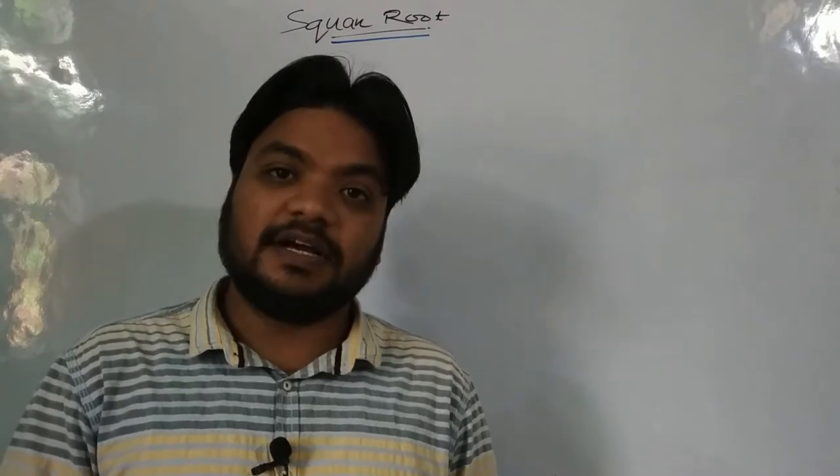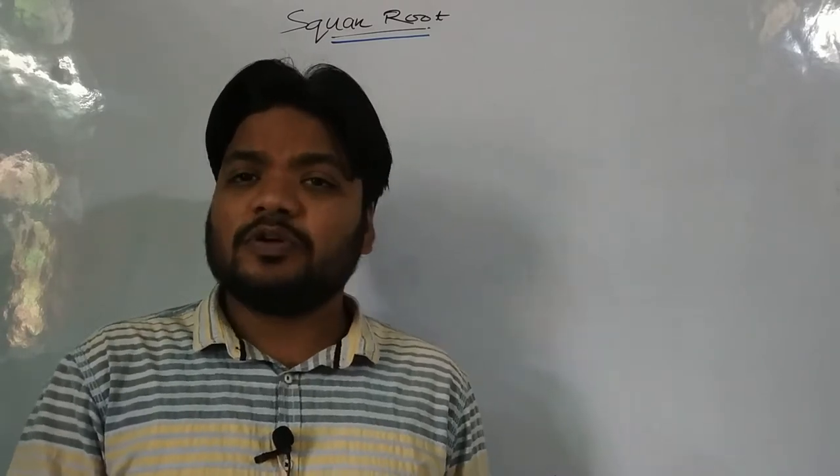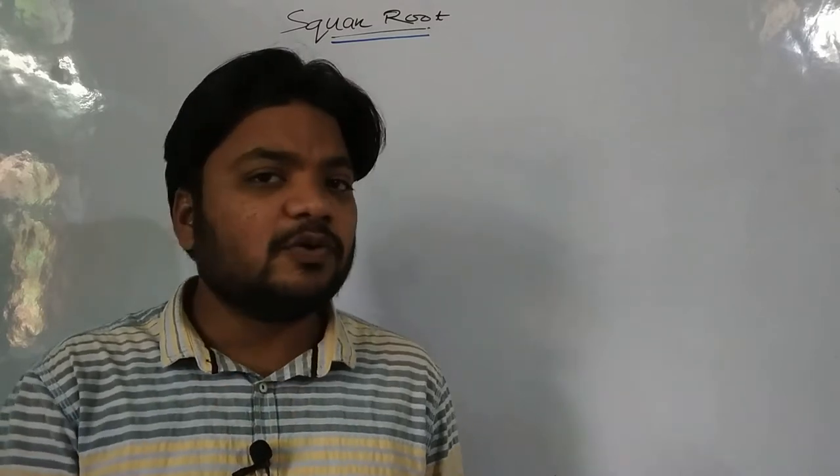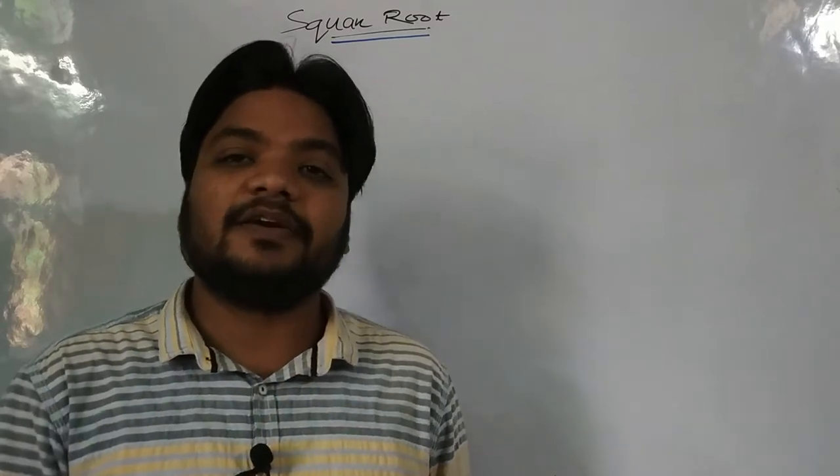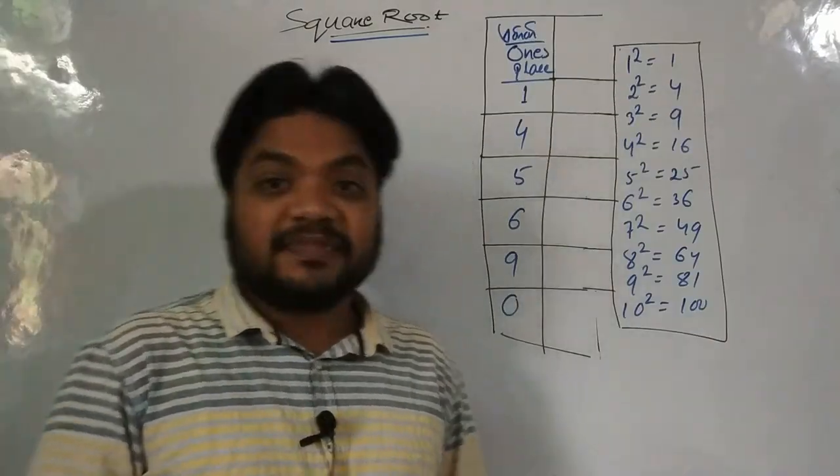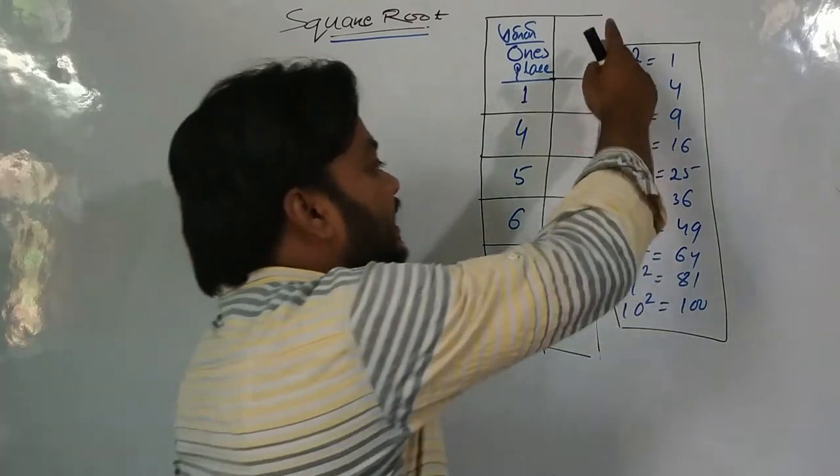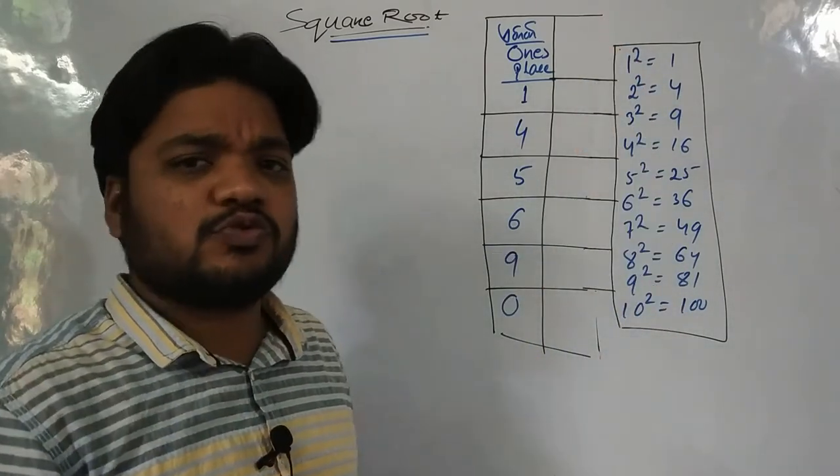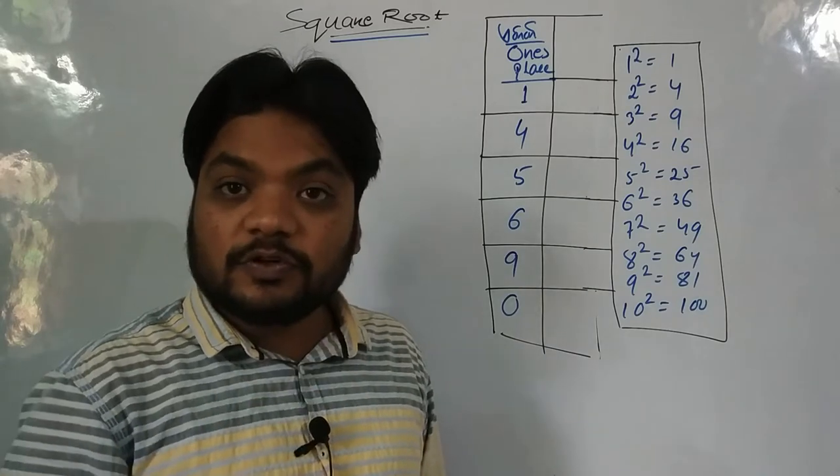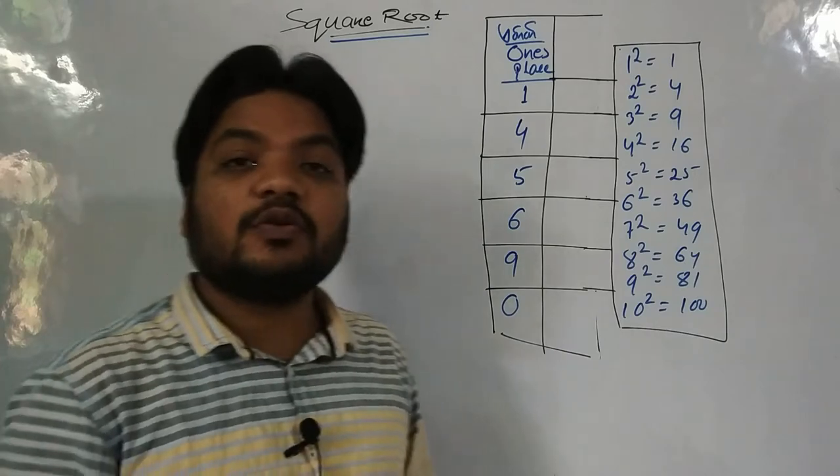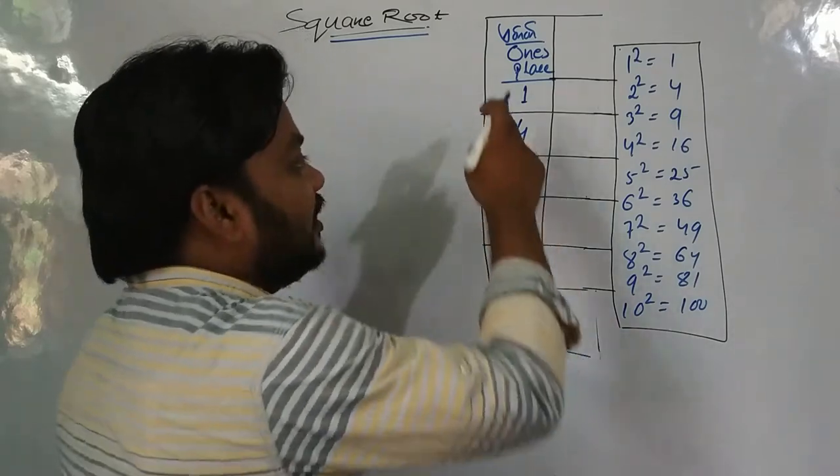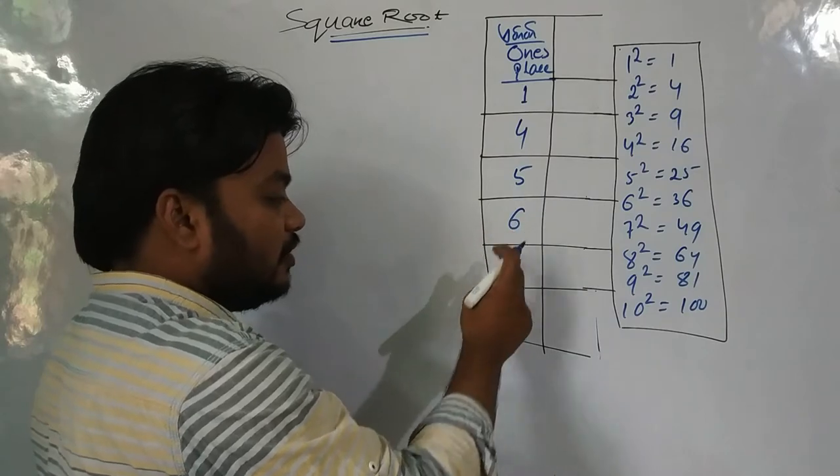So this is the square root of square root. But if you want to build square root, you will find square root of square root. You will find square root of square root. The square equals 1, 4, 5, 6, 9, and 0.